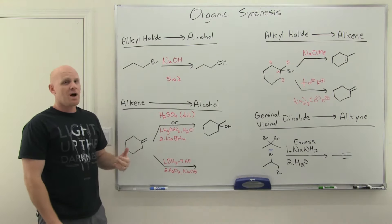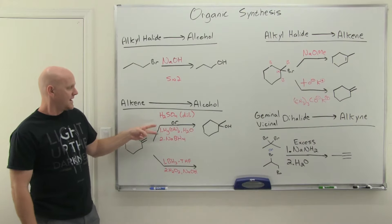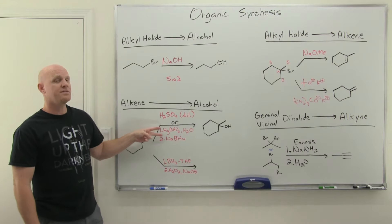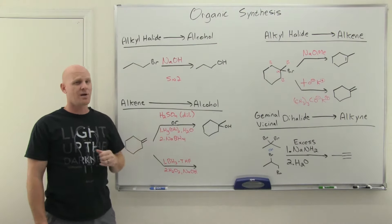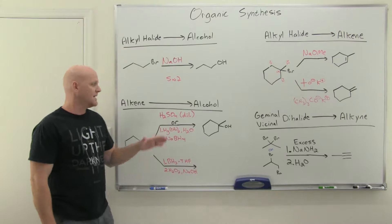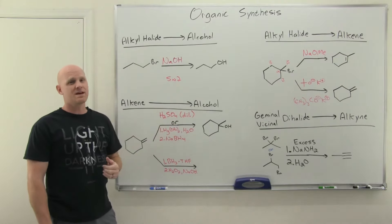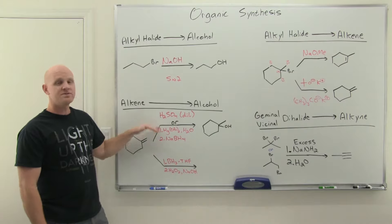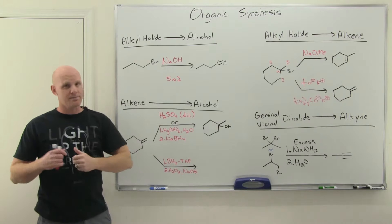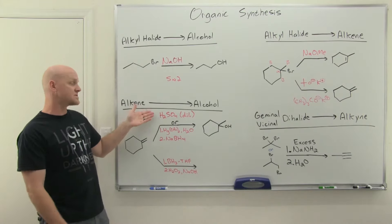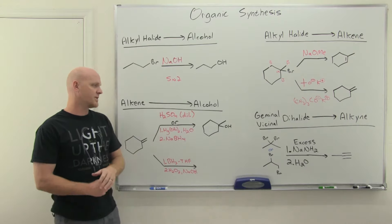There's also an alternative: oxymercuration-demercuration. The only difference is that this reaction doesn't go through a carbocation intermediate, so it has no option to rearrange. In this particular example, there is no difference — they lead to the same major product. But there are certain alkenes where a rearrangement might be feasible with H2SO4 but wouldn't happen with oxymercuration-demercuration.